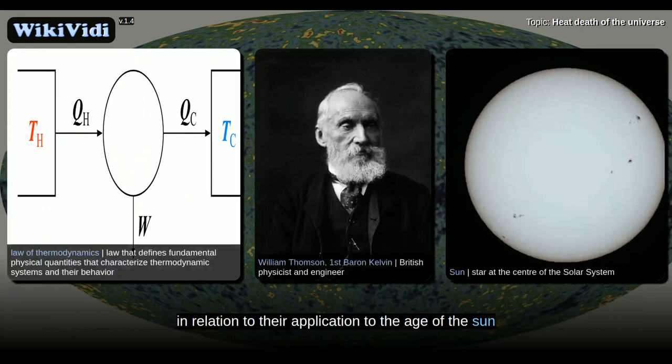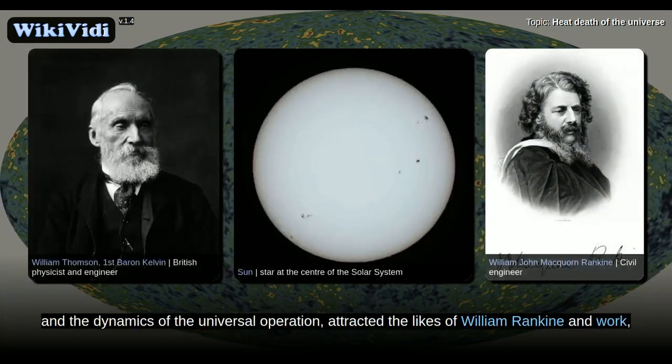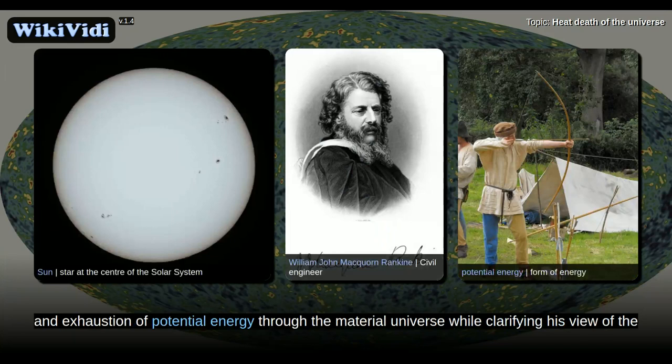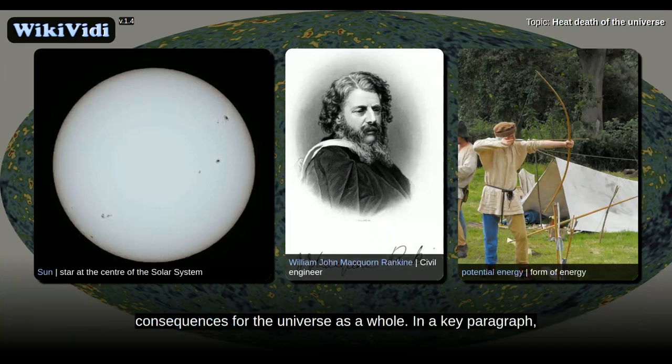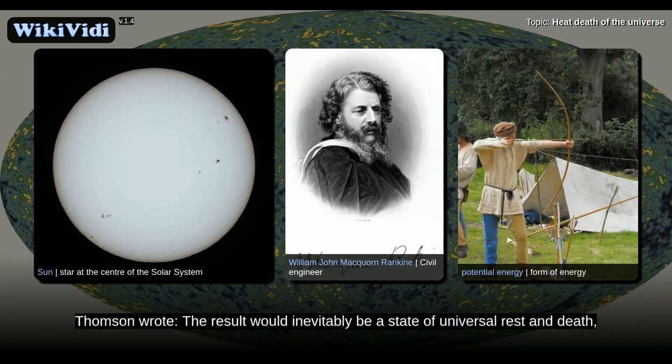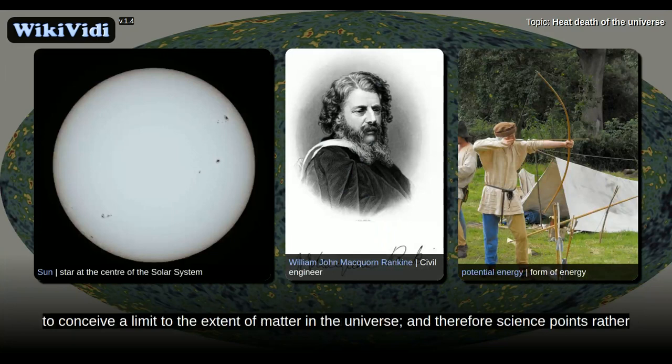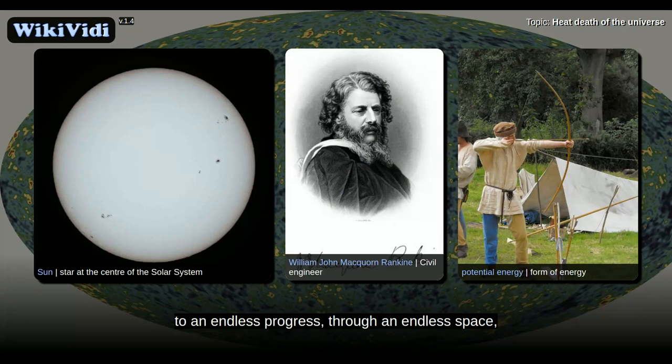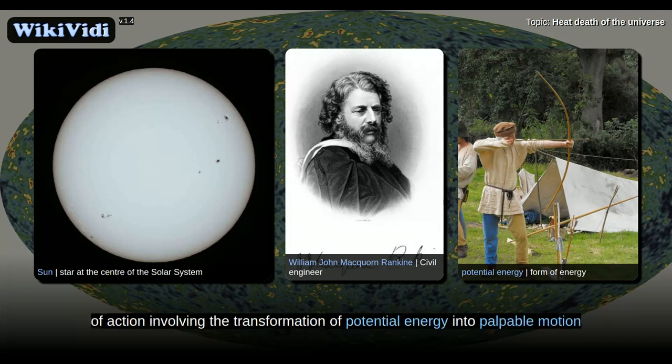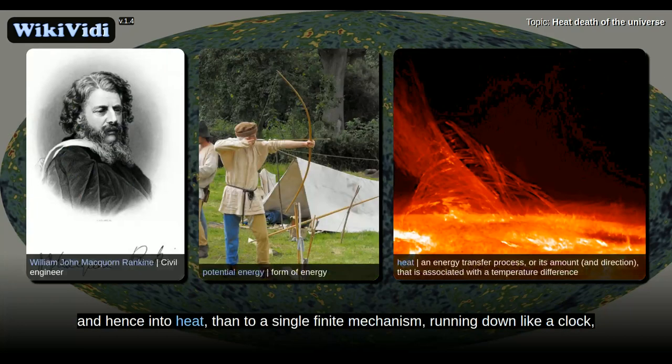In a key paragraph, Thomson wrote: the result would inevitably be a state of universal rest and death, if the universe were finite and left to obey existing laws. But it is impossible to conceive a limit to the extent of matter in the universe, and therefore science points rather to an endless progress, through an endless space, of action involving the transformation of potential energy into palpable motion, and hence into heat, then to a single finite mechanism, running down like a clock, and stopping forever.